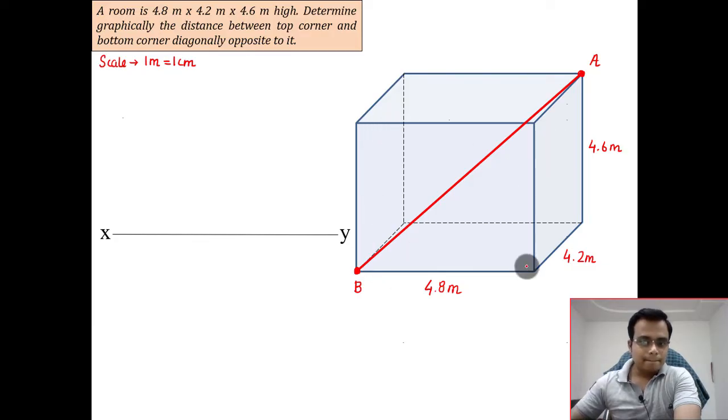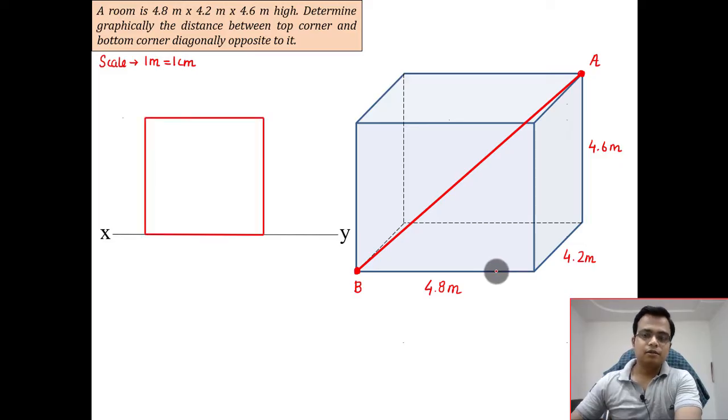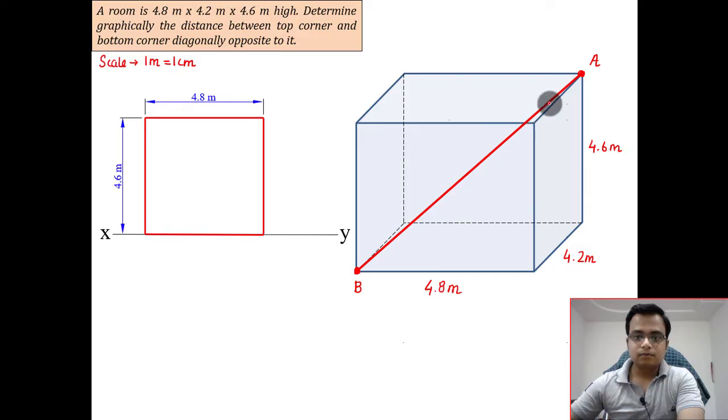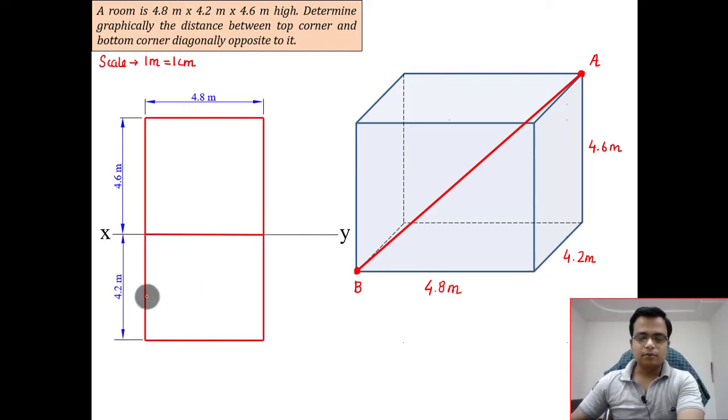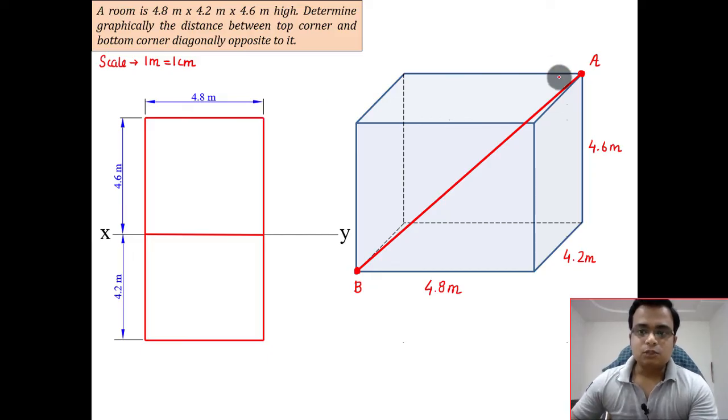You'll see this block, 4.8 by 4.6. On your drawing sheet it will be 4.8 centimeters by 4.6 centimeters. Although I'm writing meters, you need to draw using centimeters. In the top view you'll see this portion. This is 4.8 and this is 4.2.